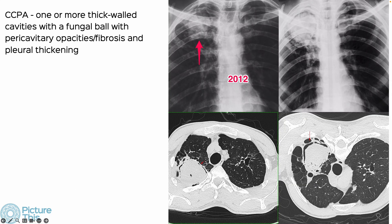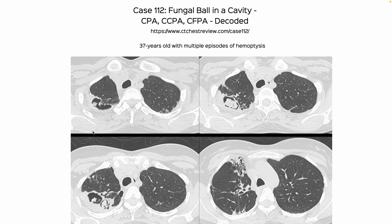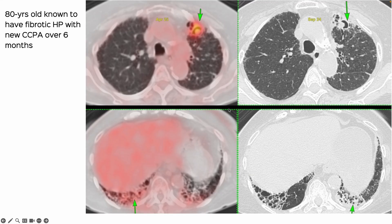This is a similar PTLD case with a large fungal ball, again fitting the classic appearance. Our patient fits the same pattern. These are all the predisposing factors that can lead to colonization and CCPA. I've done an entire post at ctchestreview.com with multiple other examples, including another PTLD patient with this appearance.